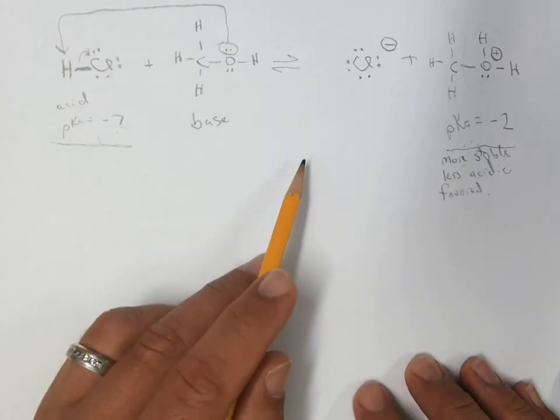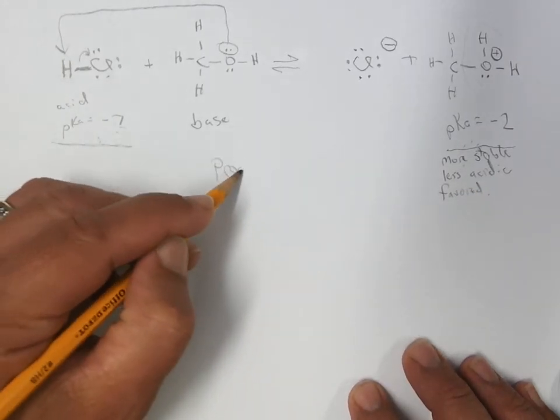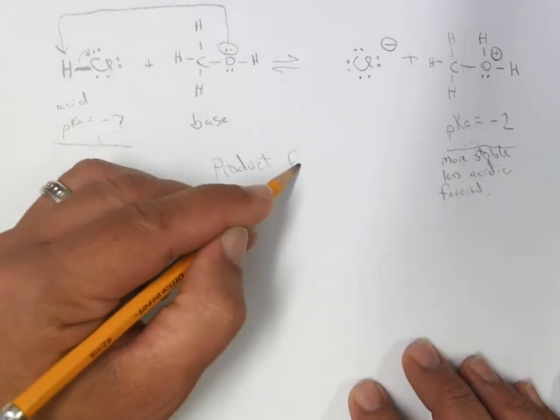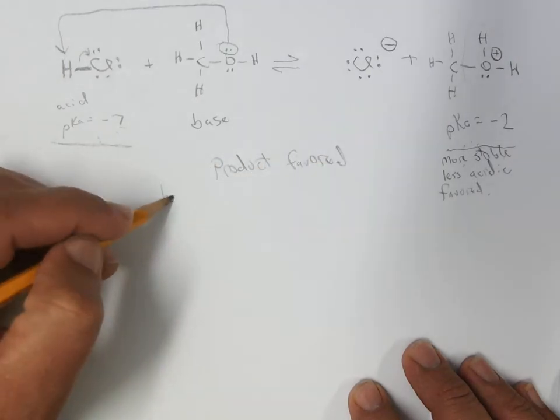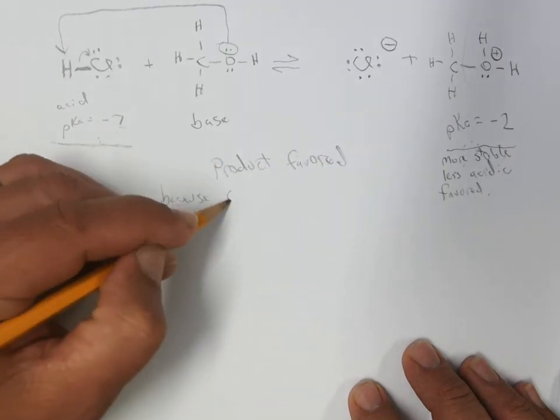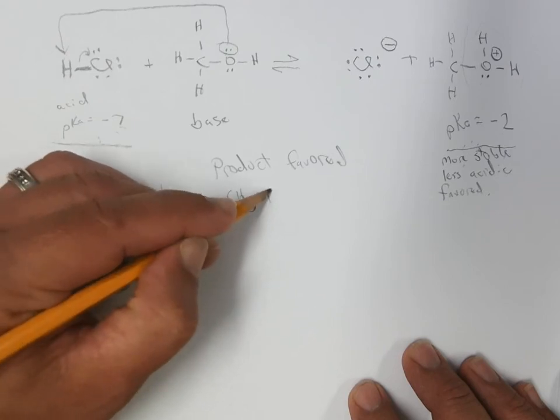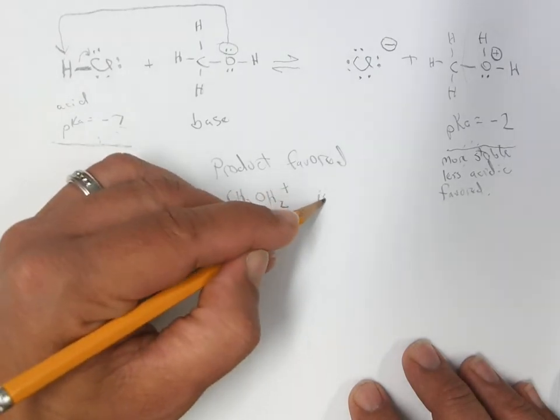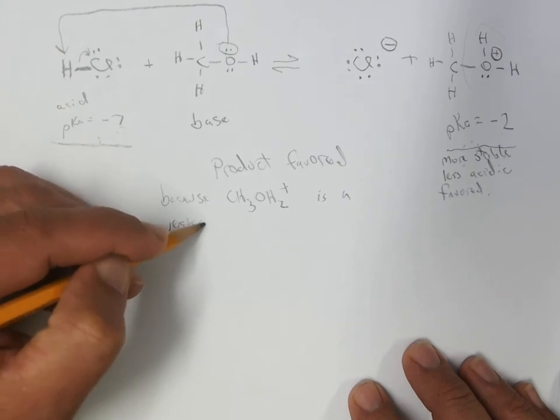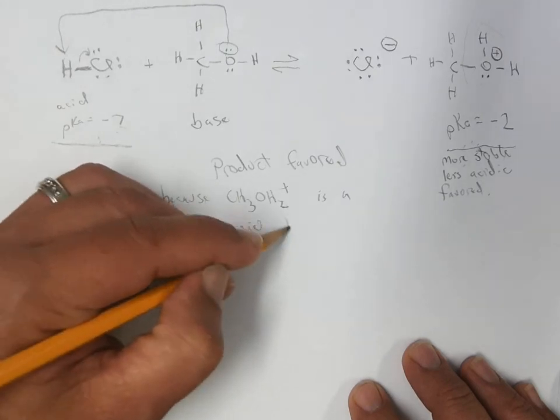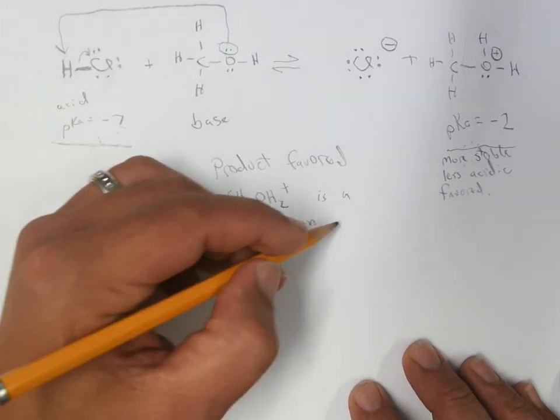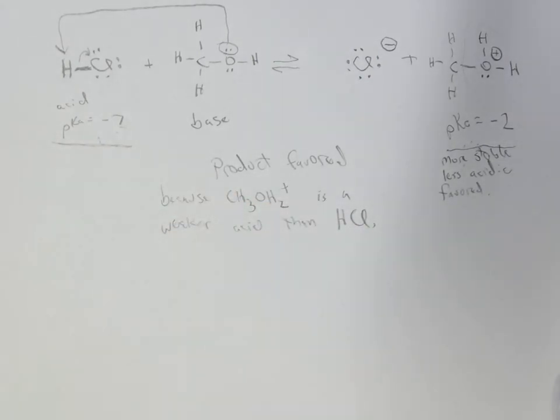So this reaction is going to be product favored because CH3OH2+ is a weaker acid than HCl, and the pKa values back that up. So a little two-arrow, one-step mechanism to transfer the proton from the acid to the base.